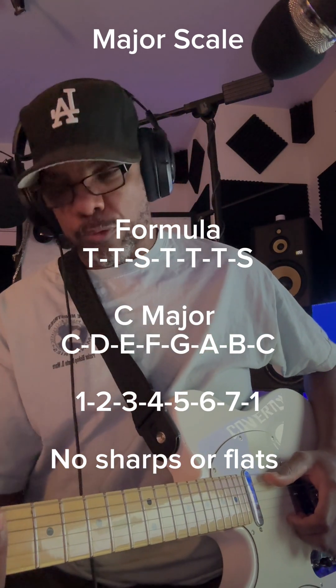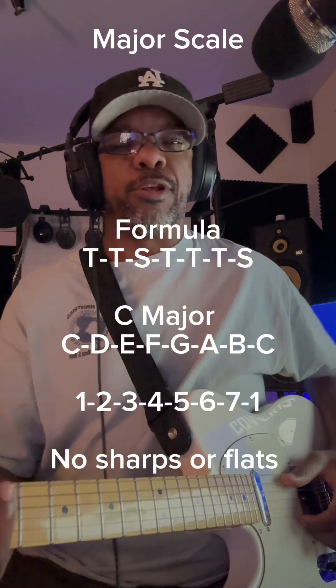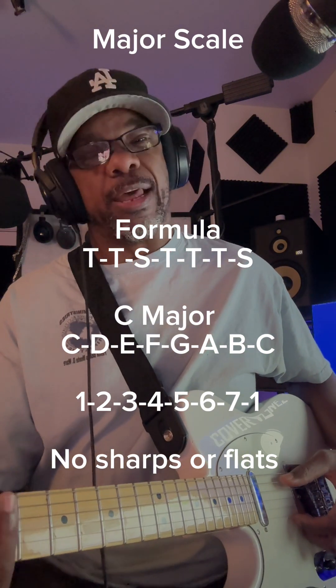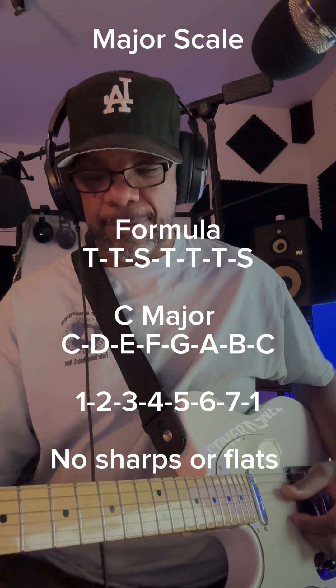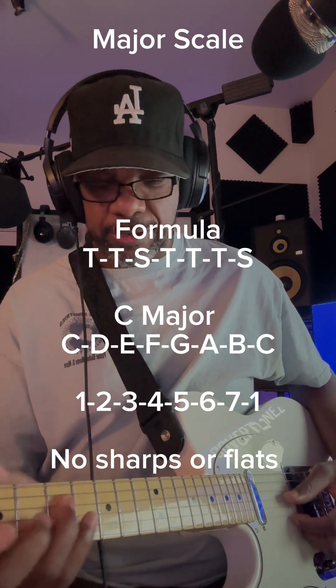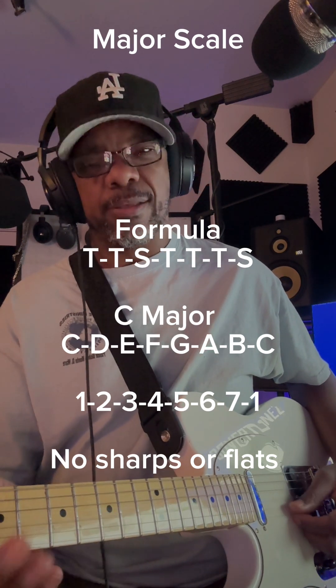If you played only the white keys starting on the C, you would get something like this: C, D, E, F, G, A, B, C.